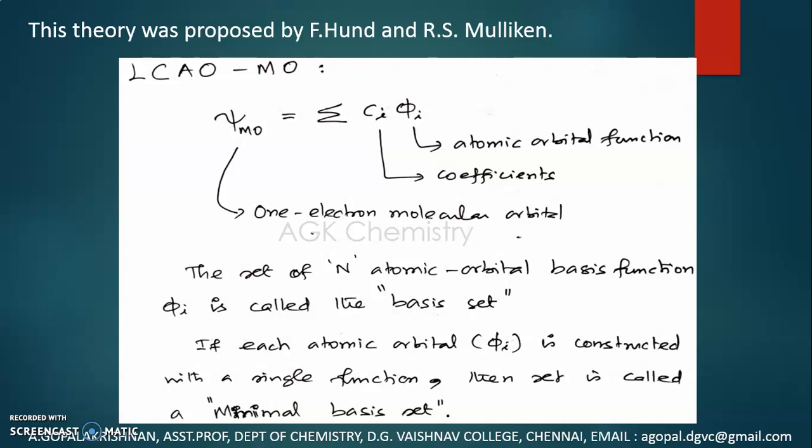We cannot say that this wave function is the exact wave function for the system, or that the variation method will give you a wave function which is exactly suitable for the system. In molecular orbital theory, to find the trial wave function, we are going to adopt a method called the LCAO-MO approximation.